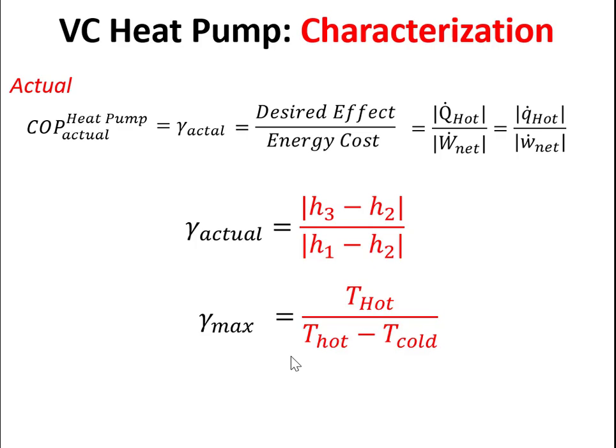If you're curious why we call this a coefficient of performance instead of an efficiency, it's because the coefficient of performance is generally greater than one. Efficiencies always run between zero and one, or zero and 100%, but coefficients of performance are most of the time greater than one. So we talk about these in terms of a coefficient of performance, not efficiency.